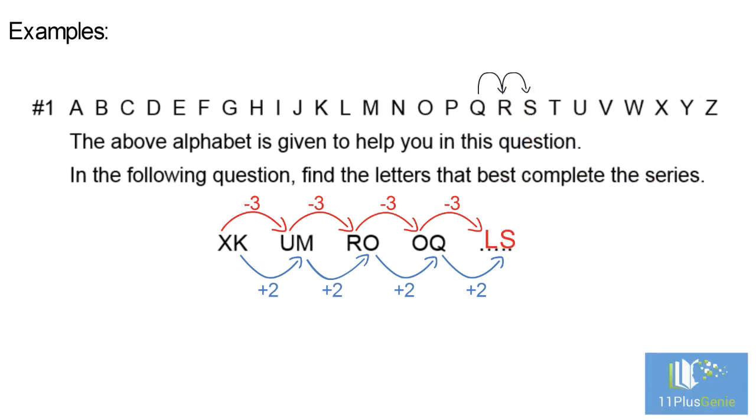We must move forward two places to find the missing letter. Q plus 2 is S. Therefore, our missing pair of letters is LS.